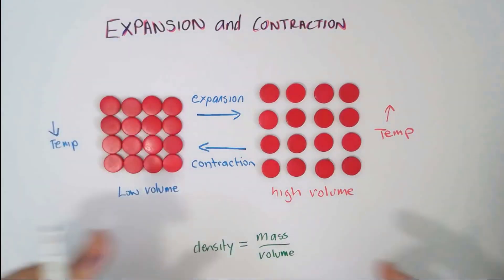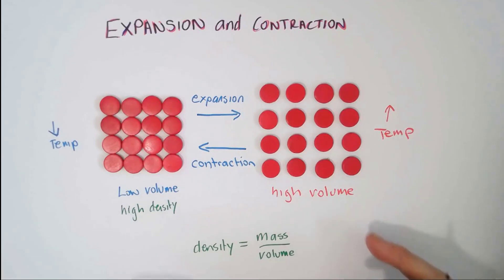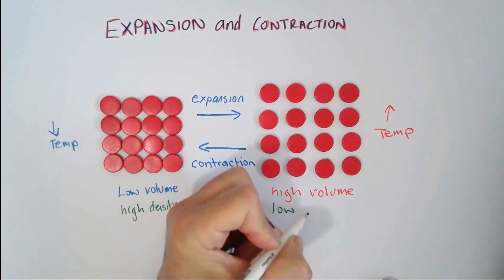So, we're not changing the mass at all here, are we? But we have a low volume and a high volume. The mass is the same. So, if we have a low volume, that means we have a high density, and when we have a high volume, we have a low density.